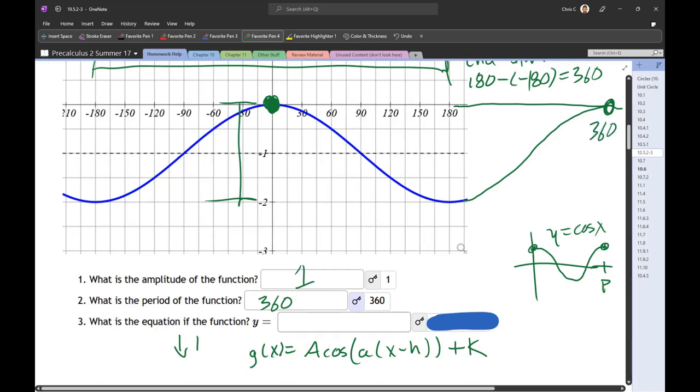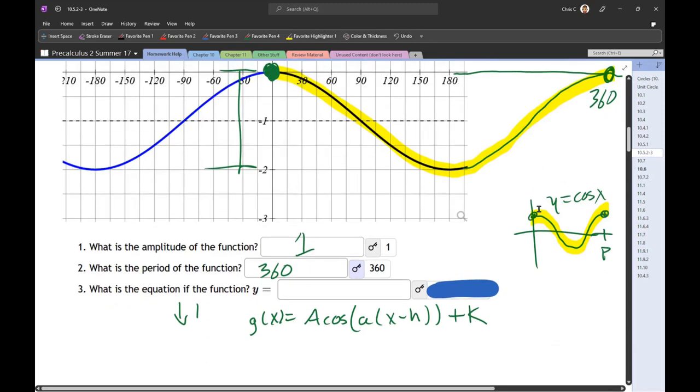Now the period I have here, which I'll highlight again, this one period looks a lot like the cosine, regular cosine one period. Alright, so our a, the big A is 1. The k is the shift down 1, which is definitely happening here. So our function starts at 0, goes down, and ends at 0.